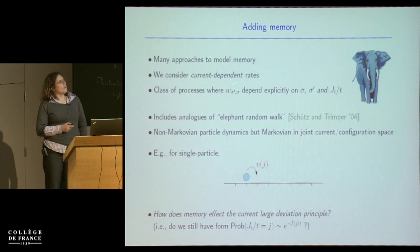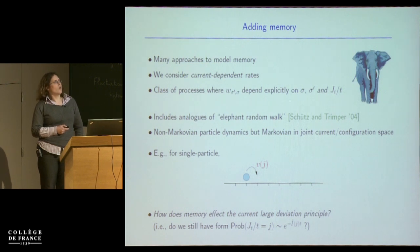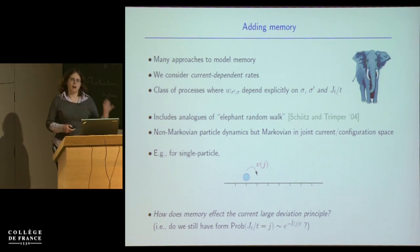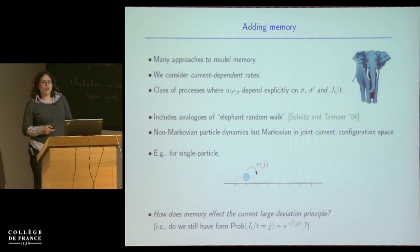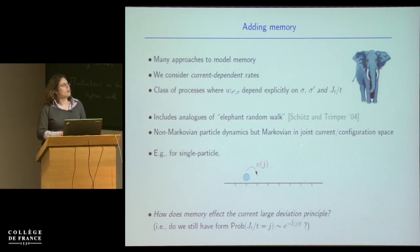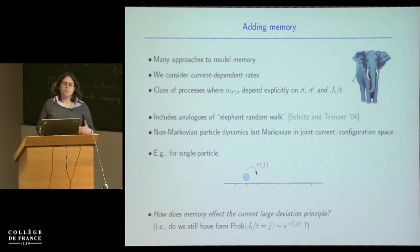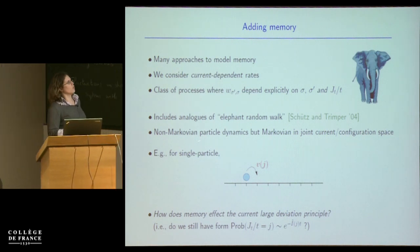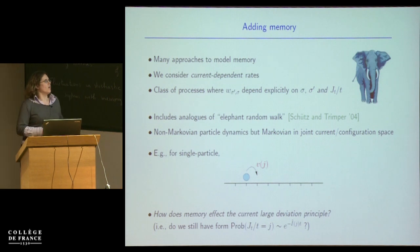We consider a class of processes where the rate to go from some initial configuration sigma to some final configuration sigma prime depends not just on those configurations but on the time average of some chosen current up to that point. So it's a kind of feedback where rates are modified depending on the current that has flowed in the past. This class of processes includes analogues of a discrete-time model called the elephant random walk — a random walker which remembers its entire history — and it's a relatively natural starting point because, although the particle dynamics look non-Markovian, in the joint state space of the current and configuration you're back to a Markovian model.